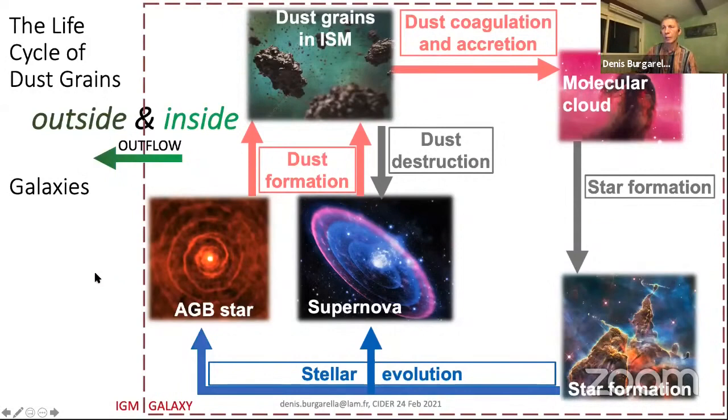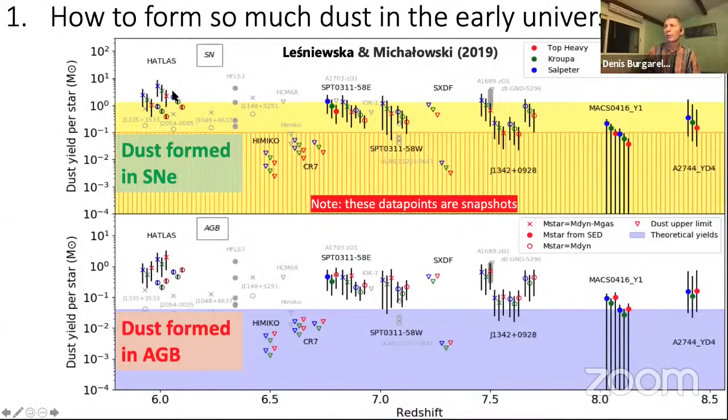We know that at high redshift, outflows are very strong and ubiquitous in IR-bright galaxies, so this is very important. This diagram I borrowed from Leśniewska and Michałowski shows redshift at the bottom and dust-to-stellar mass on the y-axis. You have two main physical processes that could produce dust grains: AGB at the bottom in blue and supernovae at the top. As you can see, it's very difficult to form enough dust to reach what we observe at high redshift.